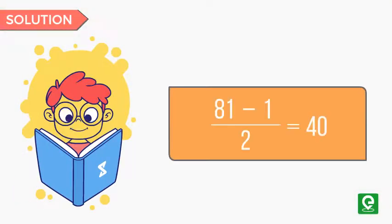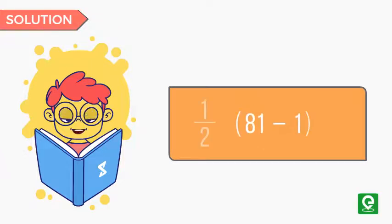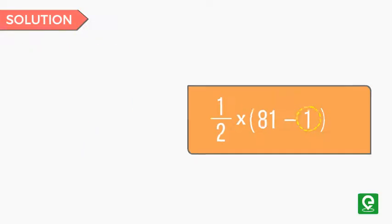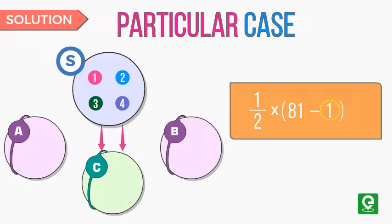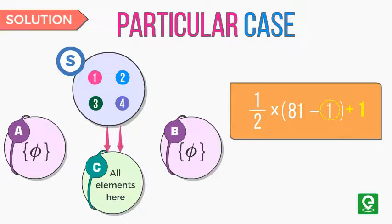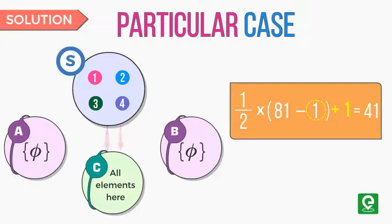However, this is not the final answer, because when we took half, we subtracted the null set. But in reality, there should exist that one case where all the elements are put in the imaginary set C. So no element belongs to set A or set B, so we need to add this one case back.